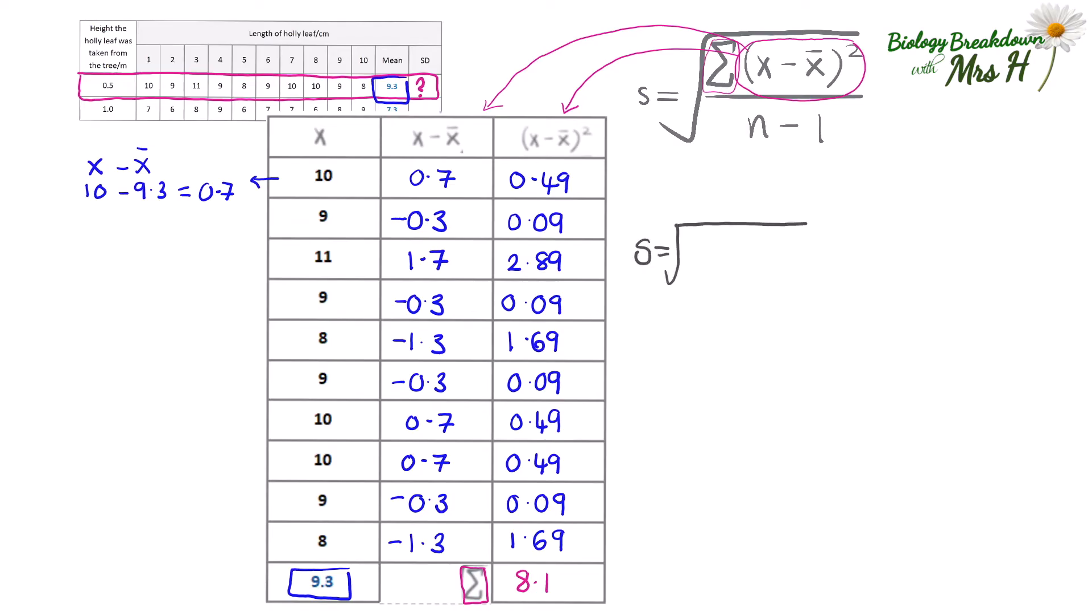So S equals the sum of X minus the mean squared, so that is 8.1. Divide that by n minus 1. Well n is 10 because we've got 10 pieces of data minus 1. That gives us 9. So S equals the square root of 8.1 divided by 9. That gives us 0.9.